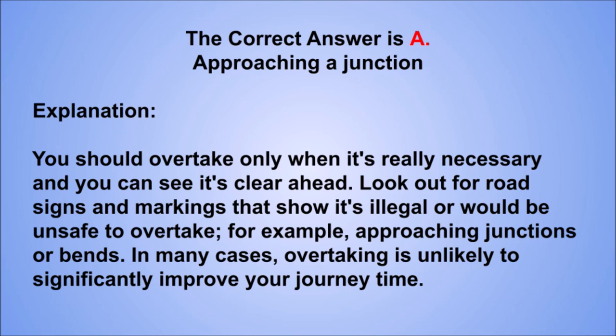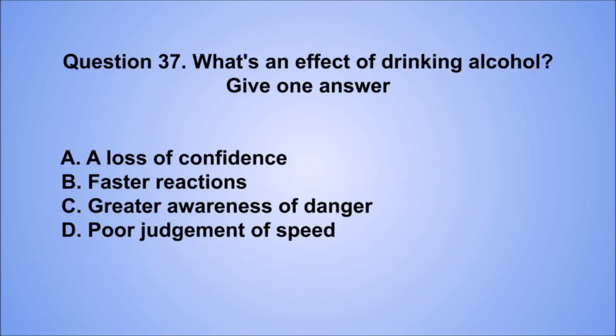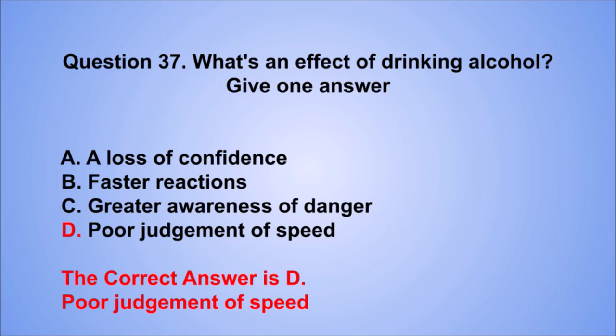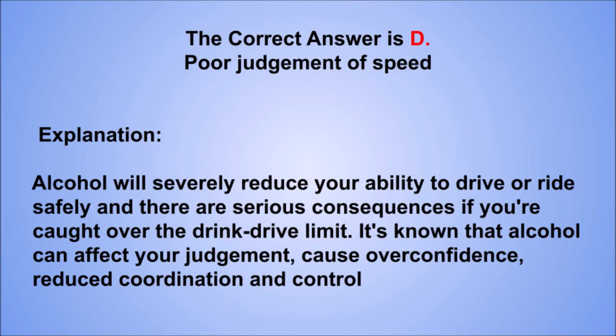Question 37. What's an effect of drinking alcohol? Give one answer. A. A loss of confidence. B. Faster reactions. C. Greater awareness of danger. D. Poor judgment of speed. The correct answer is D, poor judgment of speed. Alcohol will severely reduce your ability to drive or ride safely and there are serious consequences if you're caught over the drink drive limit. It's known that alcohol can affect your judgment, cause overconfidence, reduced coordination and control.